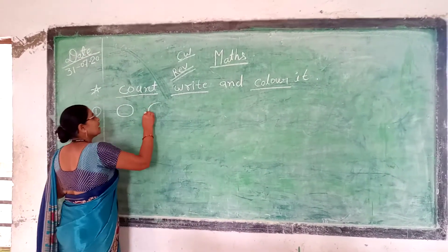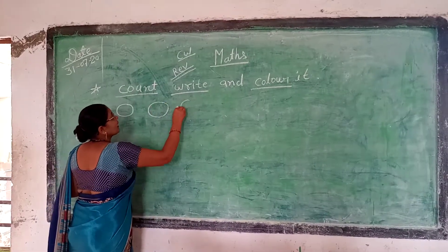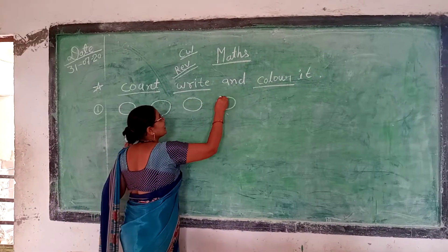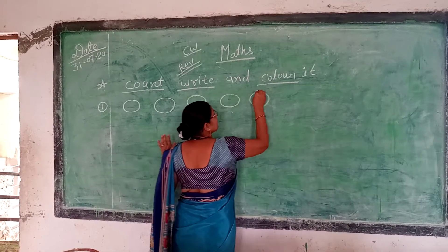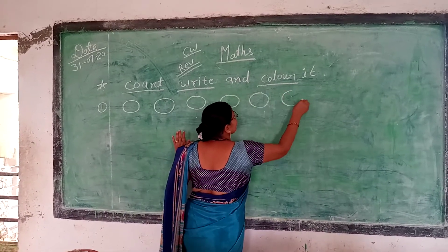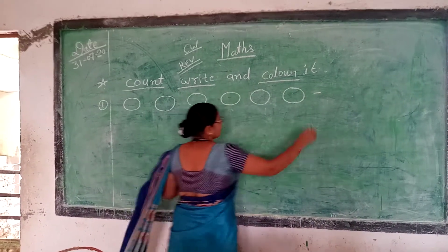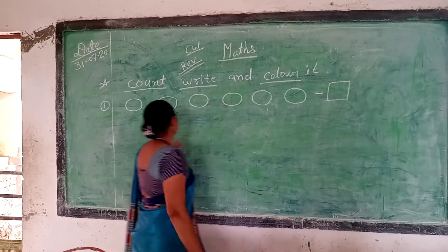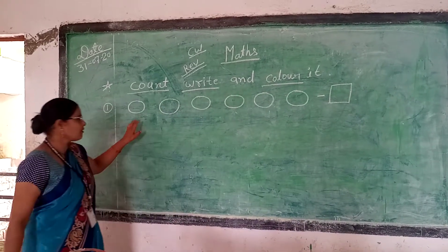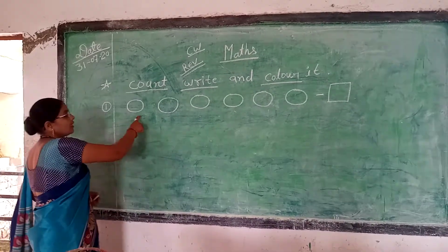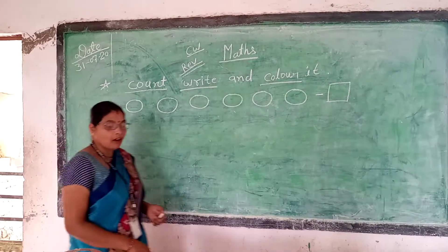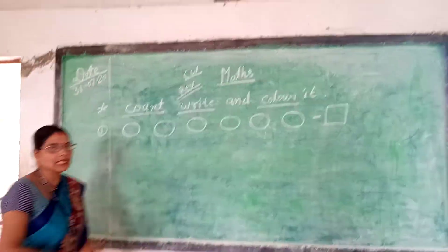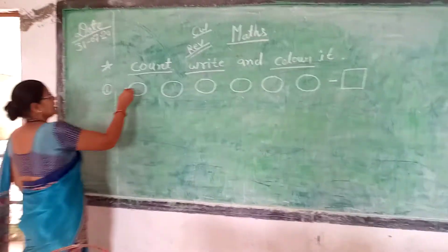Now, what do you want to do with this circle? Count. How many circles are there? And in this box? Circle count. Now, this is the color. I am going to change the color.